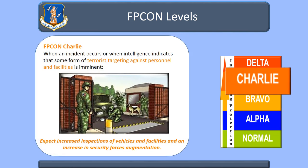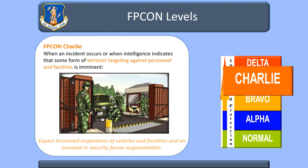FPCON Charlie is when an incident occurs or when there is an indication that some form of terrorist targeting against personnel and facilities is imminent. You can expect increased inspection of vehicles and facilities and an increase in security forces augmentation.